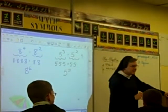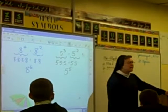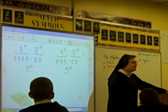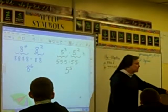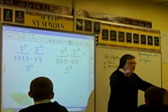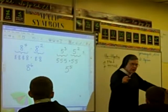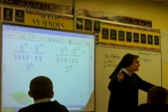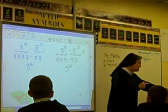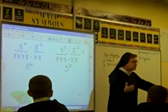Because if you had 8 to the 25th power times 8 to the 16th power, who wants to sit and write out 25 and then write out 16 and then count them all up? Shortcut: add the exponents.